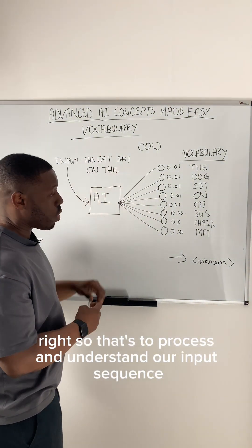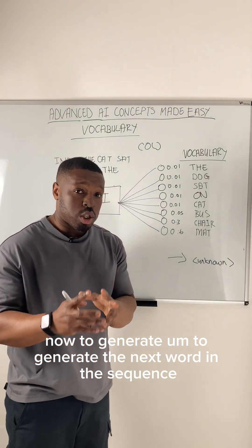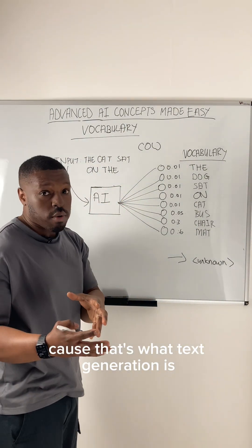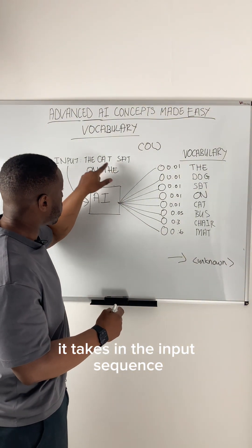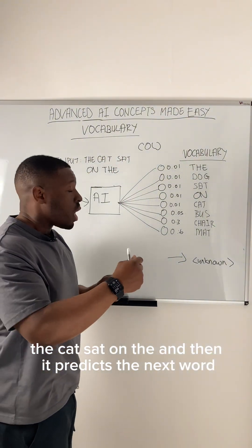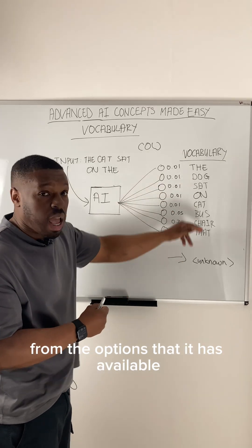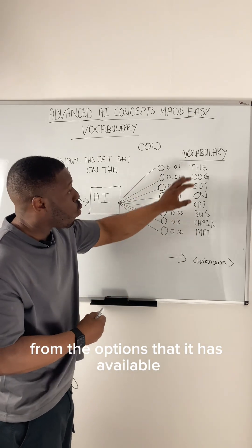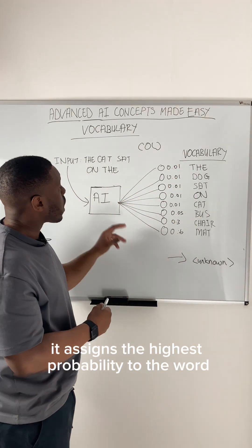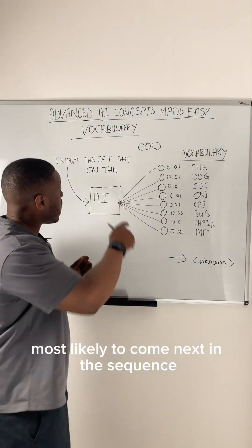To generate the next word in the sequence — because that's what text generation is — it takes in the input sequence, for example 'the cat sat on the,' and then predicts the next word from the options available, which is the vocabulary. It assigns the highest probability to the word most likely to come next.